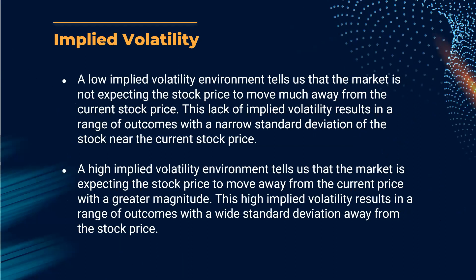A low implied volatility environment tells us that the market is not expecting the stock price to move much from its current level — this results in a narrow standard deviation range. A high implied volatility environment tells us the market expects the stock price to move away with greater magnitude, resulting in a wide standard deviation. This is just a brief revision, nothing new here.